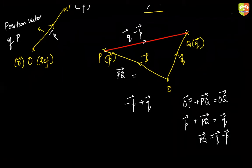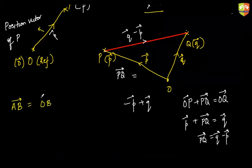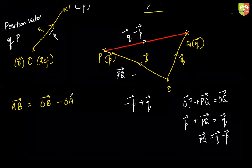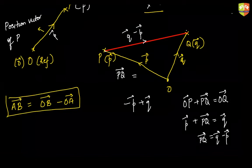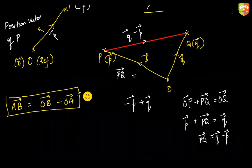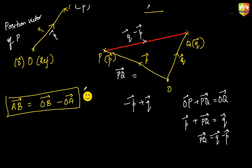To remember this formula: if you want to go from A to B, the vector AB is the position vector of B minus the position vector of A — destination minus source. Wherever you're going is your destination; where you're coming from is your source.